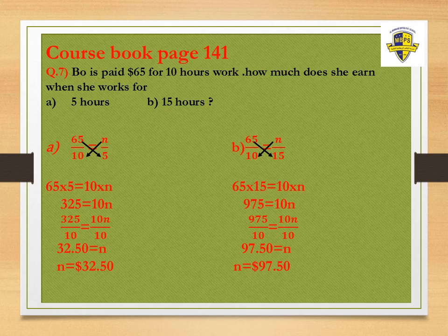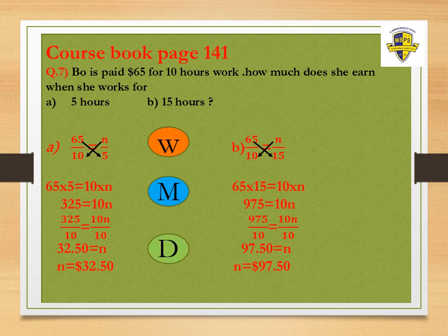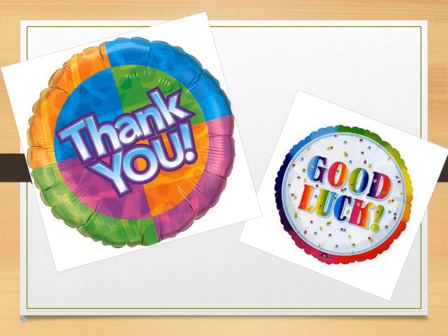Let's remember the three steps together. Step one: write it as a ratio. Step two: make a cross multiplication. Step three: divide and find the answer. Thank you, and good luck.